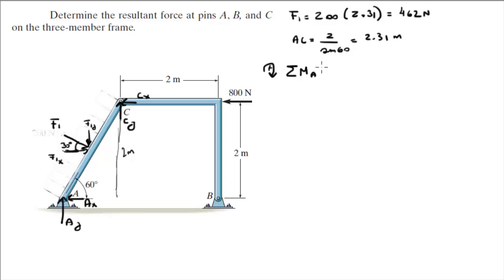So, we're working with the member on the left right now. So, sum of the moments at A, you know that it has to be equal to 0. I'm assuming clockwise is positive, so you get that F1, which we found, times half of this length, which is 2.31 over 2